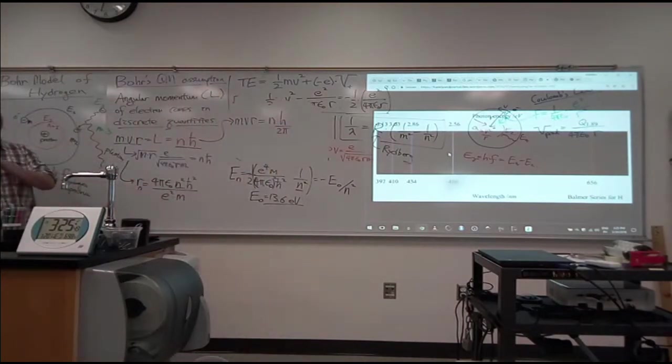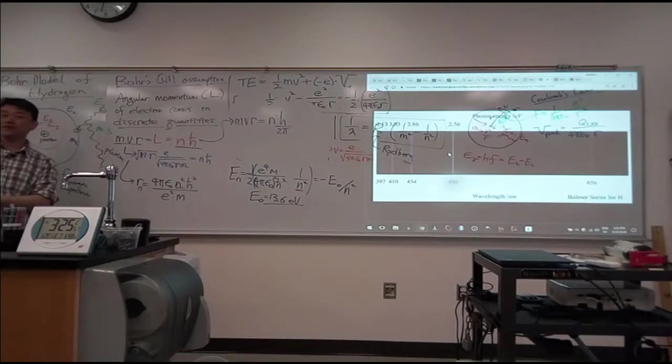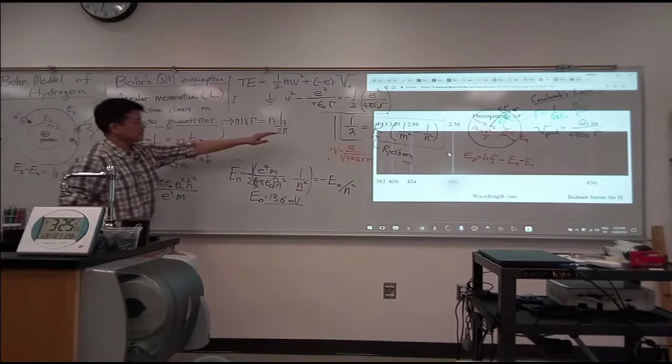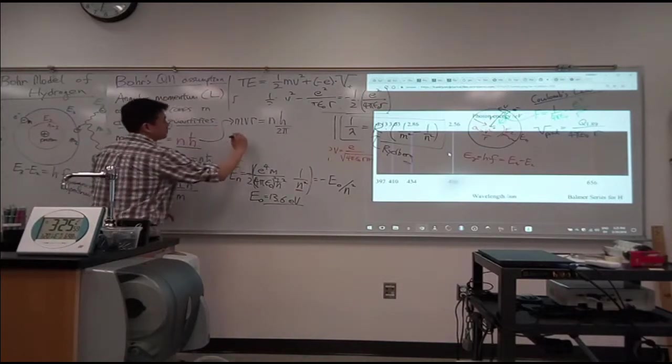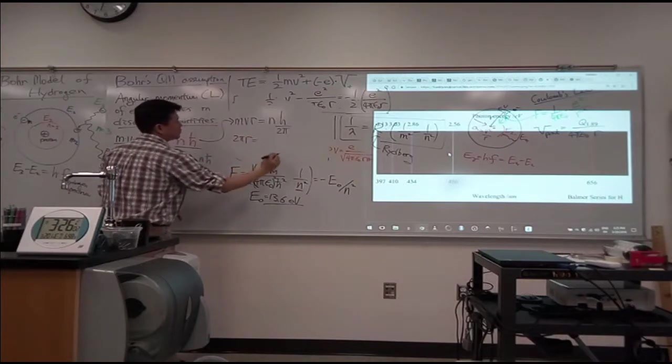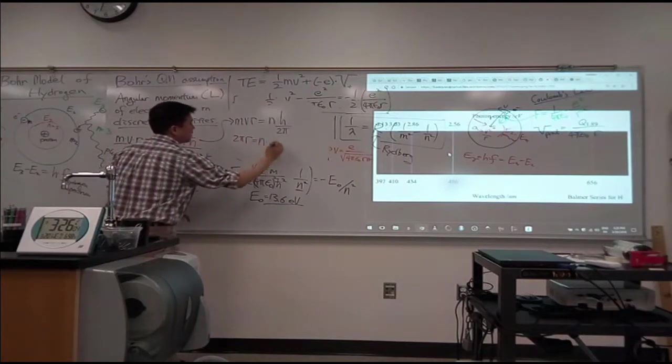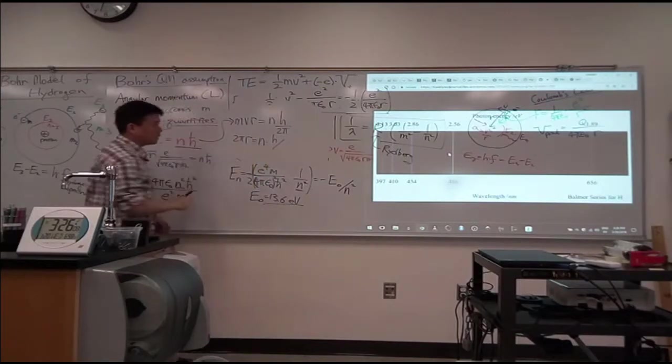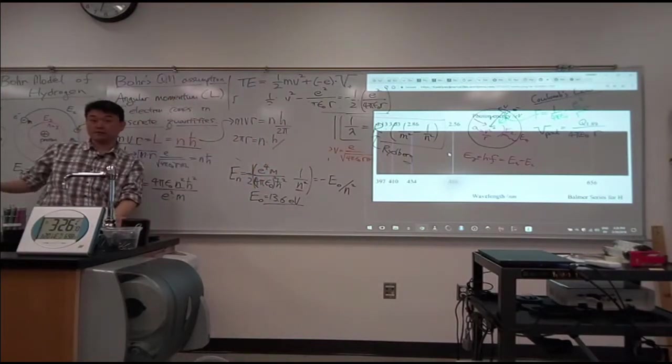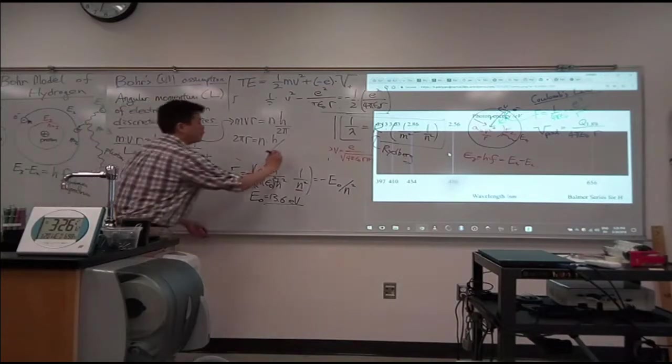Let me do a little bit of rearranging so that you can see some of the quantities as something that you recognize. Let me put 2π over here, move mv over here. So 2πr is equal to n times h over mv, or I guess mv is momentum, right? So h over p.